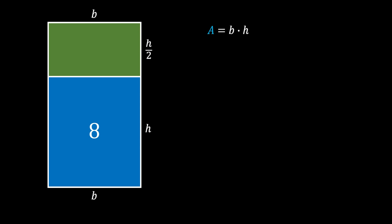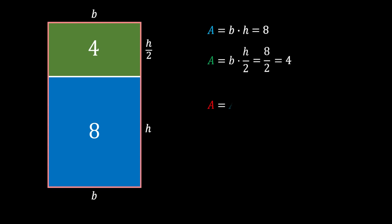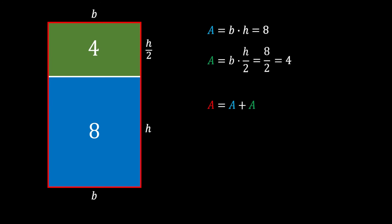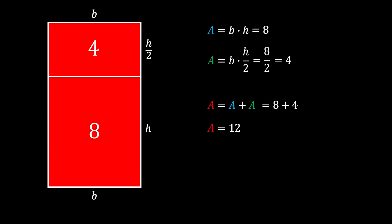We can say that this area is equal to b times h, which equals 8. This is important because the area of our smaller green rectangle can be found as b times h over 2. Since we already have b times h equal to 8, we substitute this in and get that our smaller rectangle has the area of 4. Since we are looking for the area of our big rectangle, it must be equal to the sum of the areas of the two smaller rectangles. Substituting those values, we can conclude that the area of our big rectangle is equal to 12 square units.